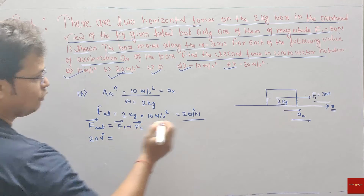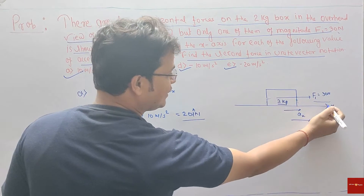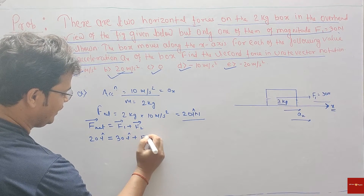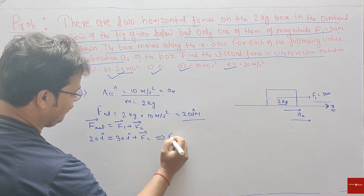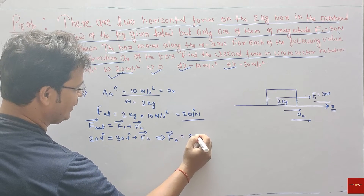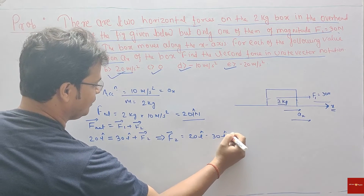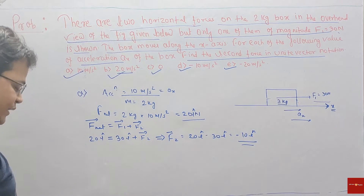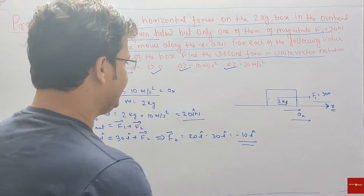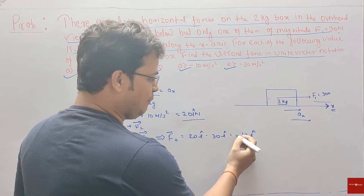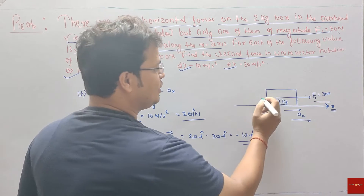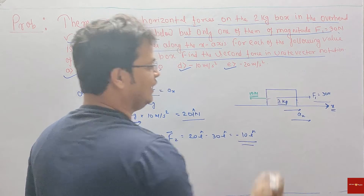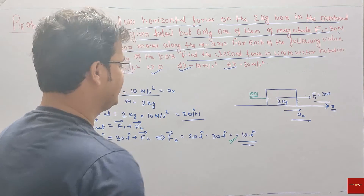Now you have to find F2. F-net is 20 i-cap. F1 value is 30 Newton along x-axis, so F1 is 30 i-cap. Therefore F2 equals 20 i-cap minus 30 i-cap, which is minus 10 i-cap. This means the second force is 10 Newton in the negative x-axis direction, opposite to F1.